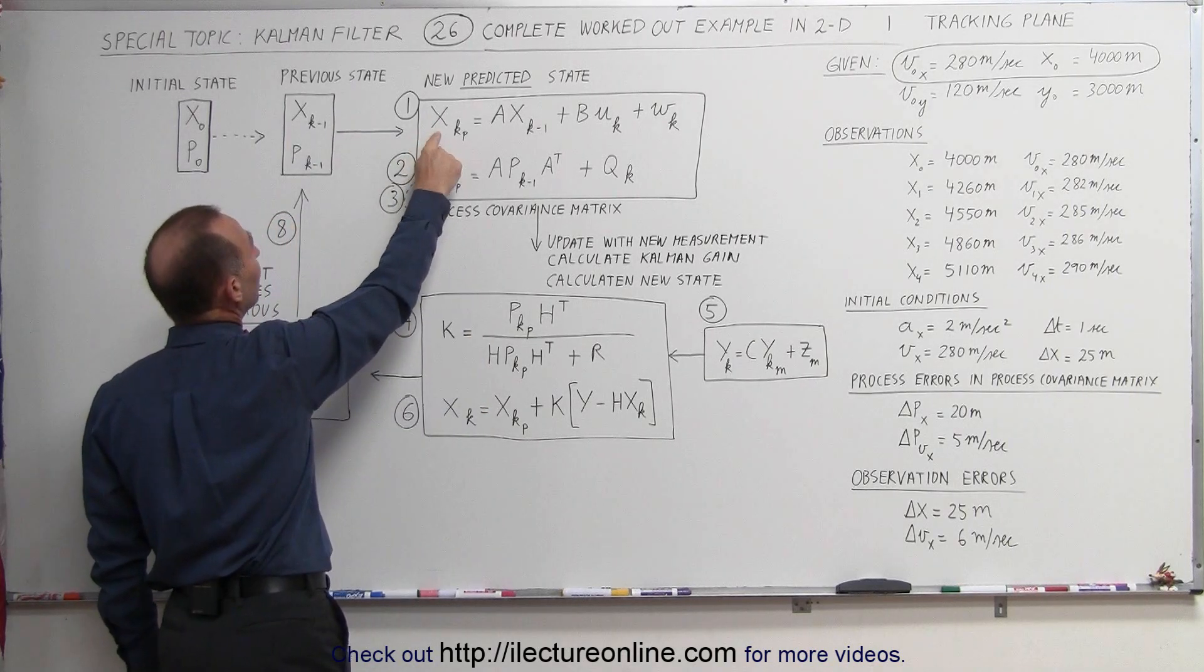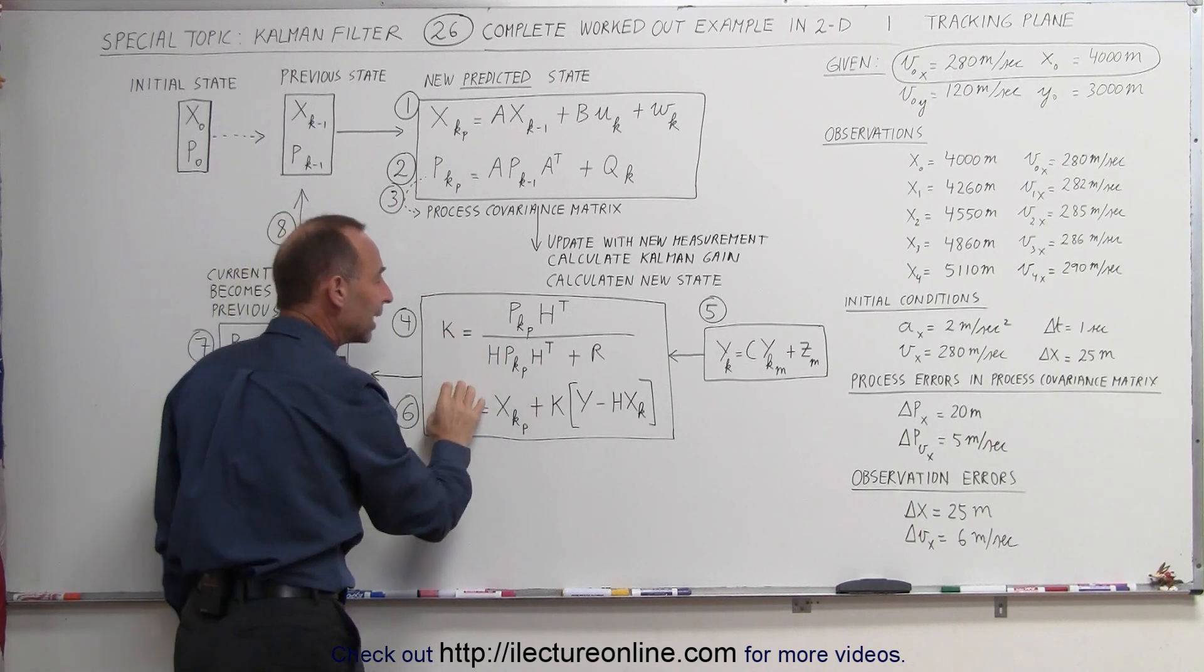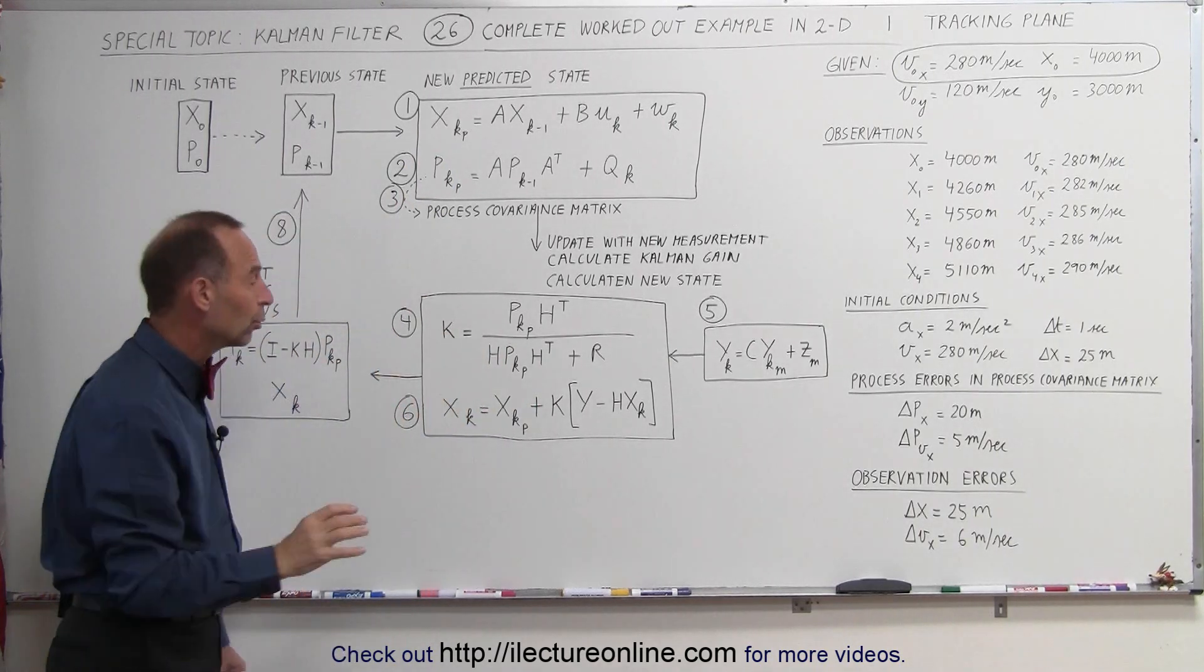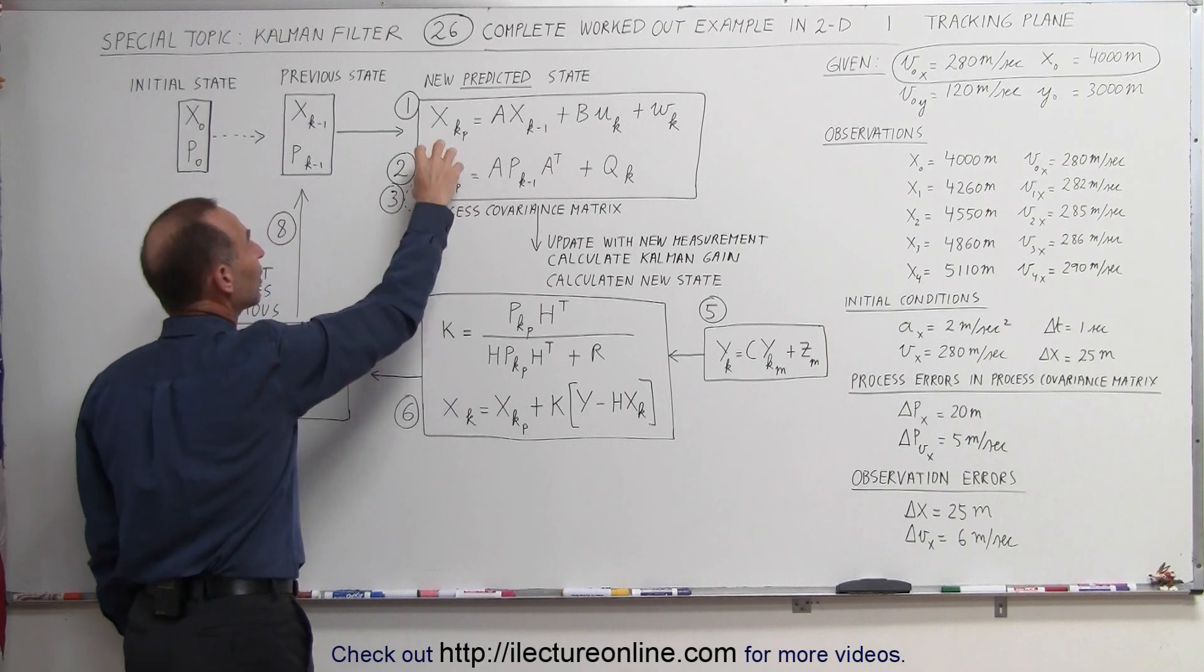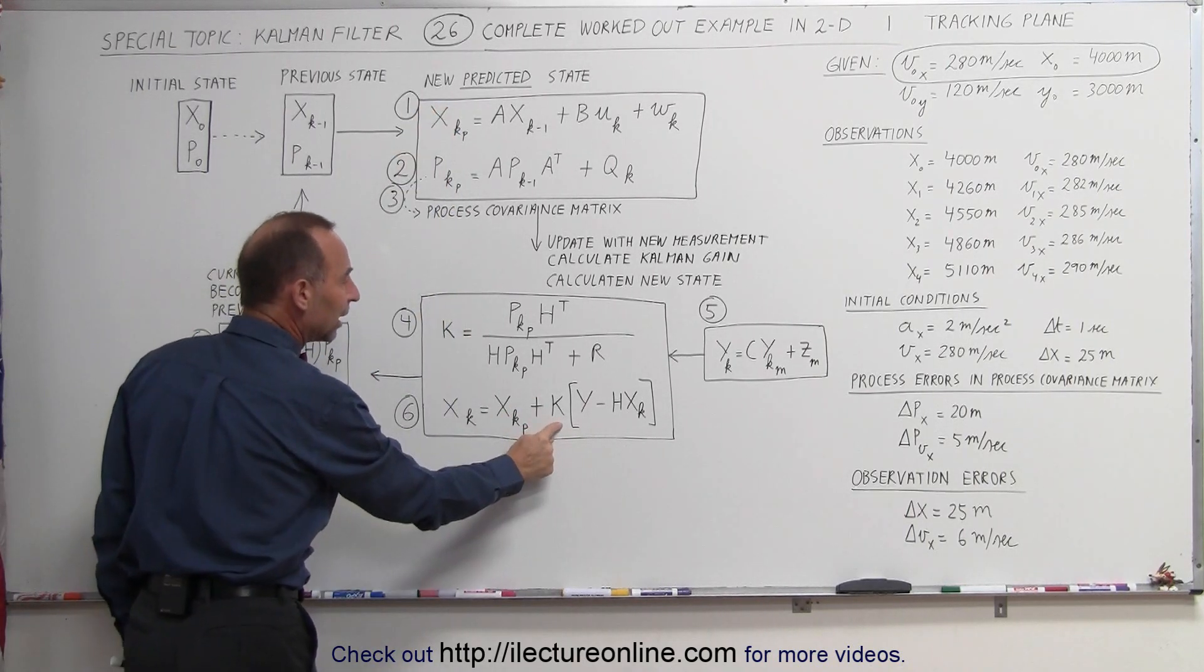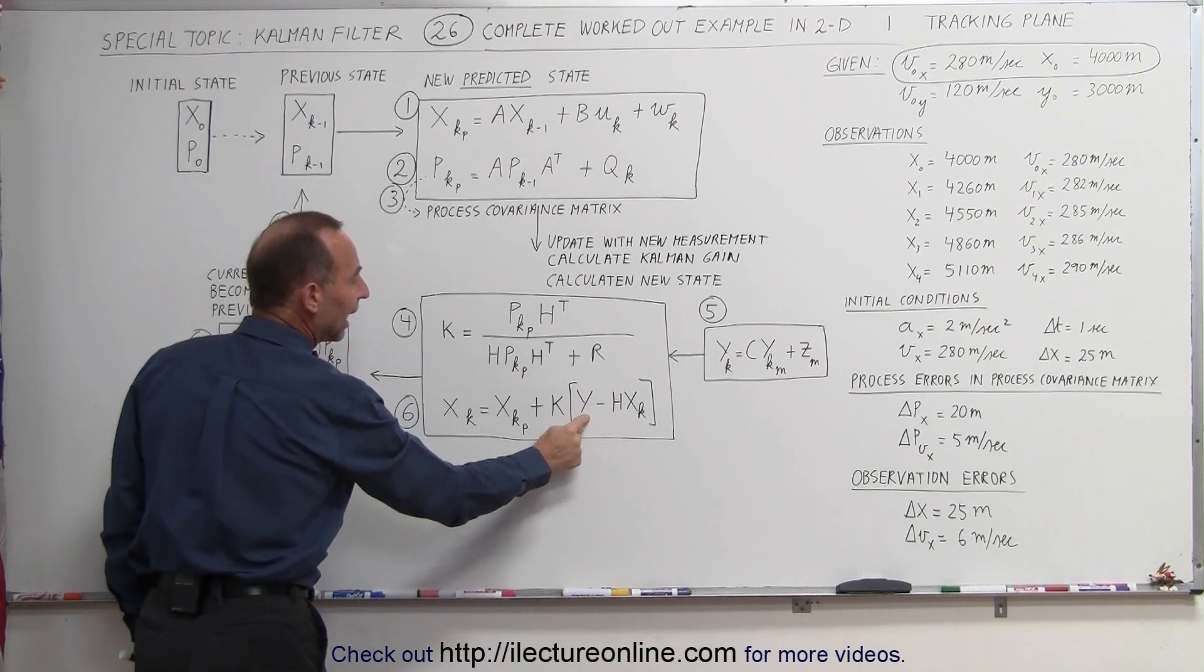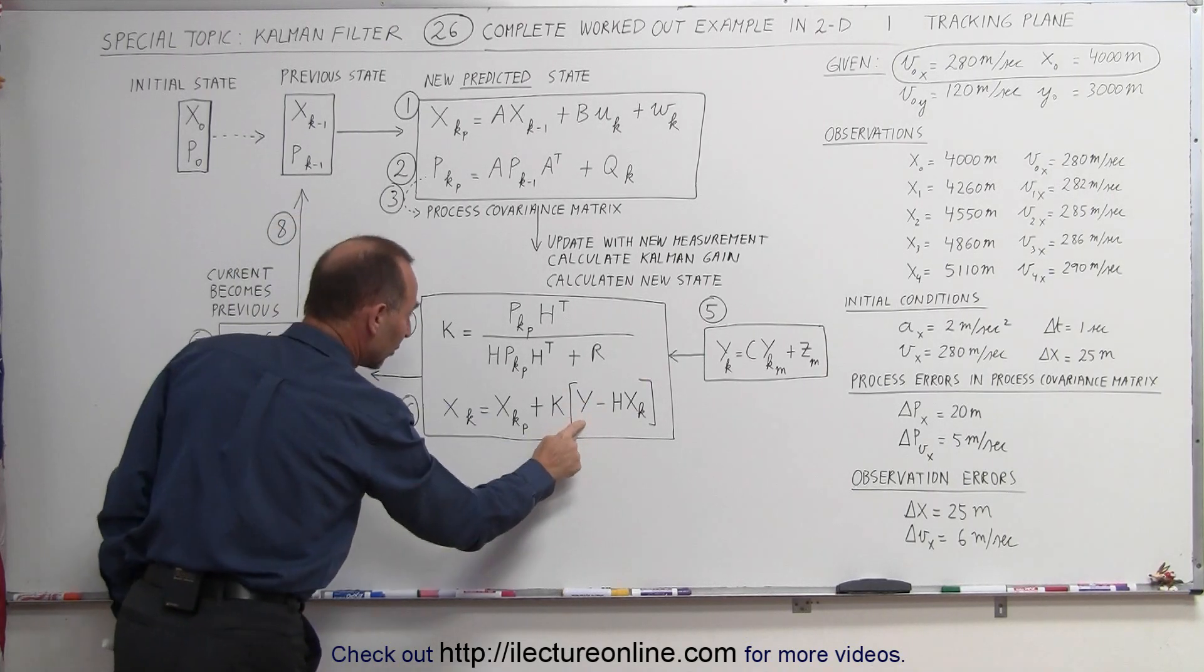This is the initial state right here, the predicted state, and now we're going to actually adjust that with Kalman gain to get an adjusted predicted state, which will be more accurate than if we had simply used this method right here. And that's going to be using the Kalman gain and then calculating the difference between the previous state and then the measurement right here.